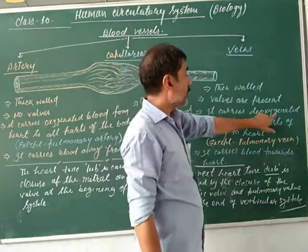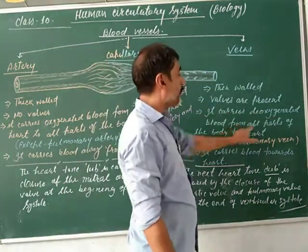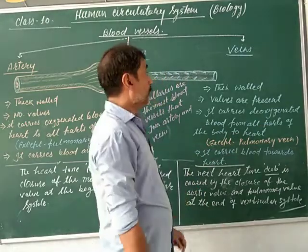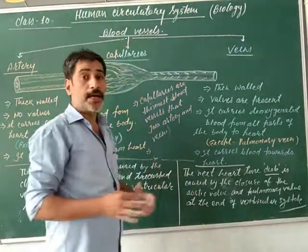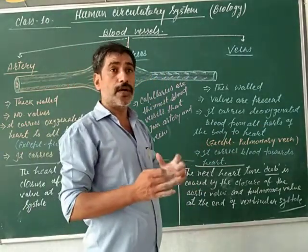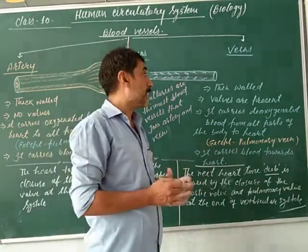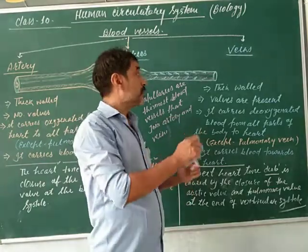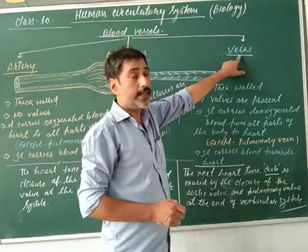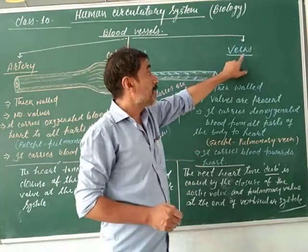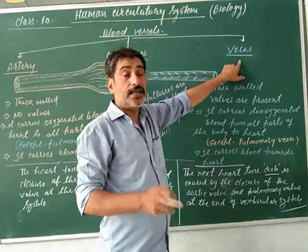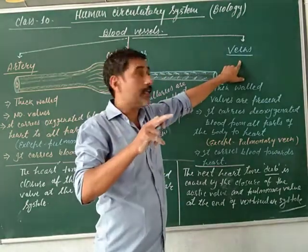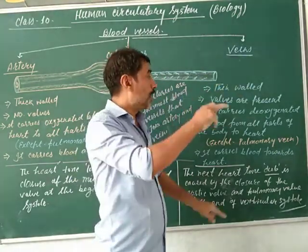Veins carry deoxygenated blood from all parts of the body to the heart. Veins carry the deoxygenated blood from the whole body parts to the heart.